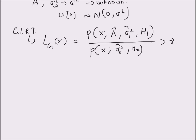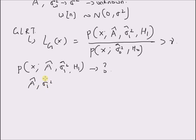The key difference between the generalized likelihood ratio test and the normal Neyman-Pearson test is that in the GLRT we do not know the parameters A and the noise variance sigma squared. So the goal becomes estimating these probability distributions. For the alternate hypothesis, we need to find the probability distribution of x with the estimates of the unknown parameters A and sigma squared — A-hat and sigma-one-squared-hat are maximum likelihood estimates under H1.